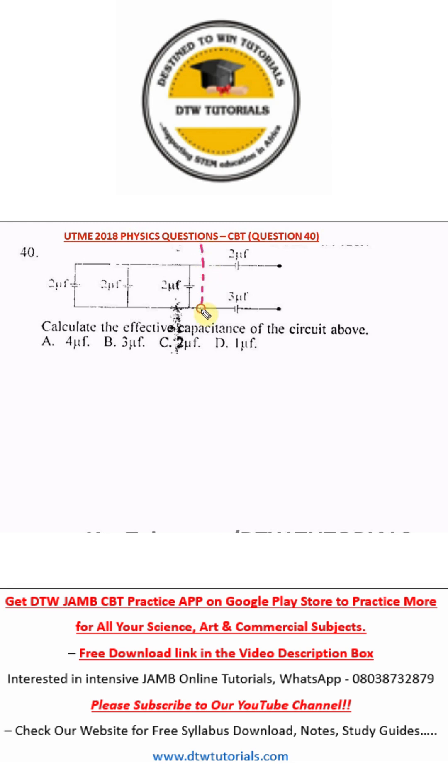Let's resolve this. Remember, to calculate the capacitance of capacitors in parallel, what is the formula? You do C equals C1 plus C2 plus C3, and so on.